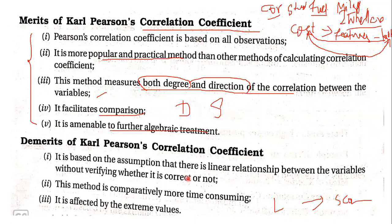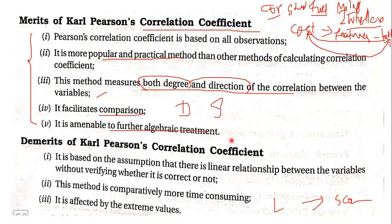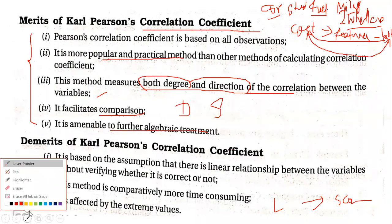Even after these demerits, Karl Pearson's coefficient is the best and most practical popular method used in daily life. Data analysts use this majority of the time, and in production machinery — like in a TVS plant where robots do manufacturing work — robots are fed using correlation and regression equations.